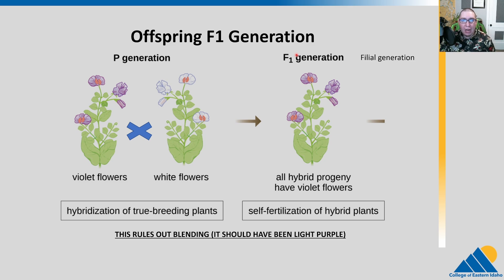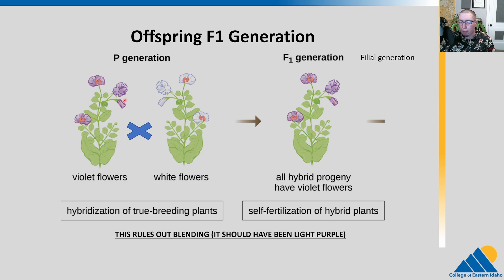What did Mendel observe? He found that when you cross the true breeding purple plant with the true breeding white flowered plant, all of the F1 progeny had purple flowers. And that purple was identical to the purple of the purple parent. The white trait — the white form — has gone missing. That's a little weird.